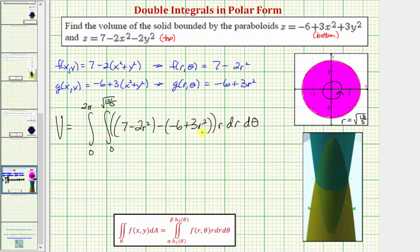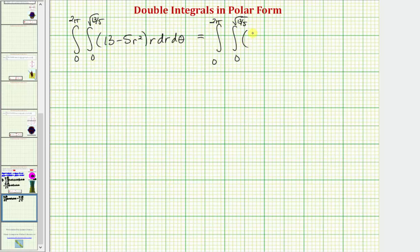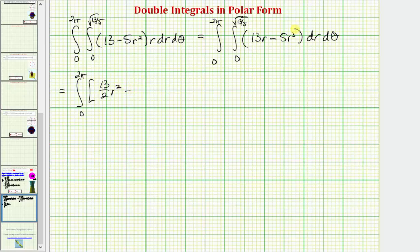Let's go ahead and simplify the integrand function. The volume equals the double integral of f of r, theta minus g of r, theta, with the extra factor of r in polar form, giving r dr d theta. Simplifying: seven minus negative six is 13, and negative two r squared minus three r squared is minus five r squared. Distributing the r, the integrand becomes 13r minus five r cubed.